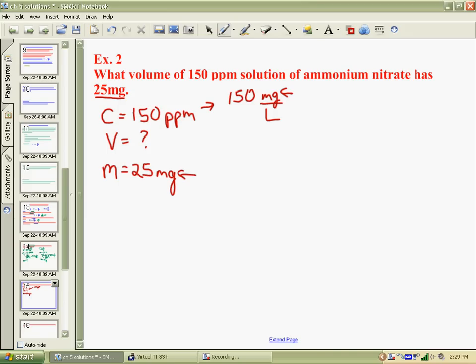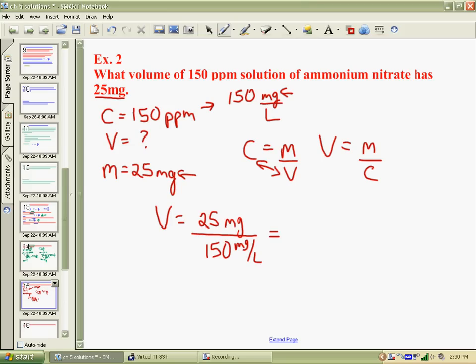Again, my main formula, c equals m divided by volume. To rearrange for volume, you would have v equals m divided by c. So we take our mass, 25 milligrams, divide by a concentration of 150 milligrams per liter. And 25 over 150 would be 1 over 6.